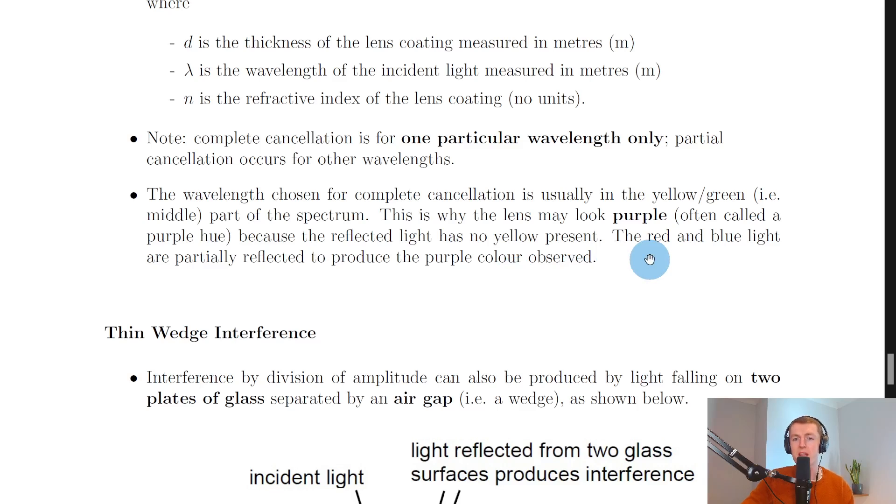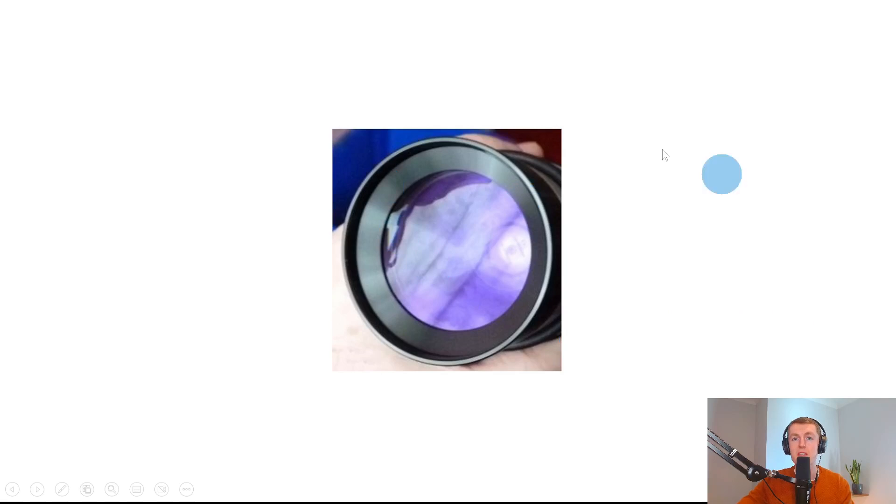So if you've ever looked at a camera lens, for example, and seen this purple hue on it, then that is due to this partial reflection of the red and blue light combining to form this purple color. And you can see an example of this purple hue on a camera lens here, where you've got reflection of red and blue light combining to produce this purple color. And that means that the coating has been chosen to cancel out reflections of light of our particular wavelength being in the middle part of the visible spectrum. And this would be light from the green or yellow region, which is undergoing destructive interference, and therefore there's no reflection of that color.